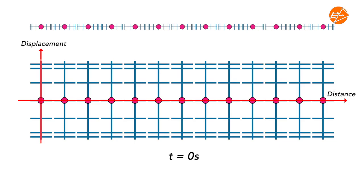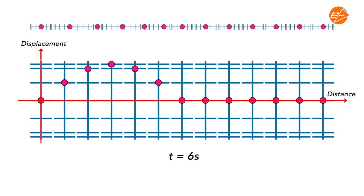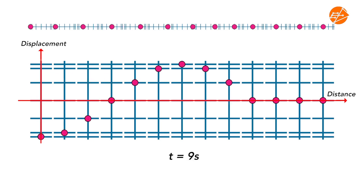Let's re-look at one full periodic motion of particle 1 in relation to the other 12 particles held together by forces of attraction. As particle 1 completes one full periodic motion, the wave also travels through one wavelength. All particles will vibrate horizontally about their equilibrium positions, while the wave moves horizontally to the right. This shows that the particles vibrate parallel to the wave motion.